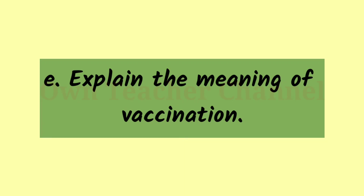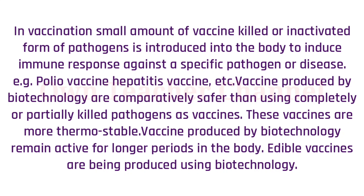Explain the meaning of vaccination. In vaccination, a small amount of vaccine — killed or inactivated form of pathogens — is introduced into the body to induce an immune response against a specific pathogen or disease. For example, polio vaccine, hepatitis vaccine, etc. Vaccines produced by biotechnology are comparatively safer than using completely or partly killed pathogens. These vaccines are more thermostable and remain active for longer periods in the body. Edible vaccines are also being produced using biotechnology.